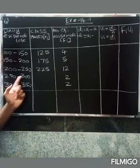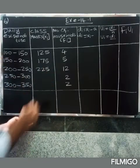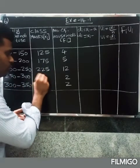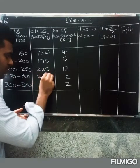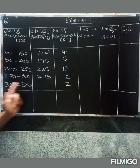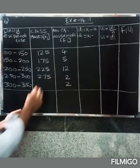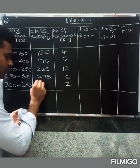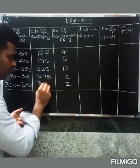For 250 to 300, the middle value is 275. For 300 to 350, the middle value is 325.